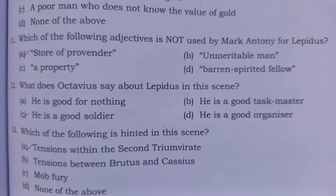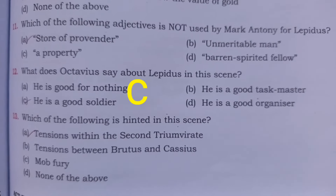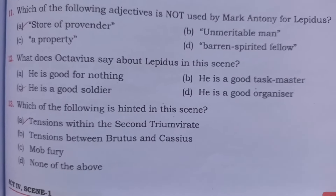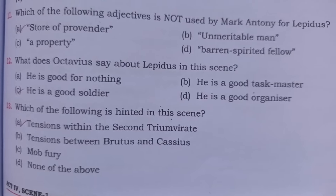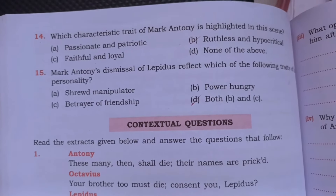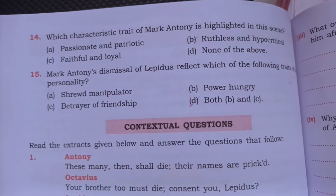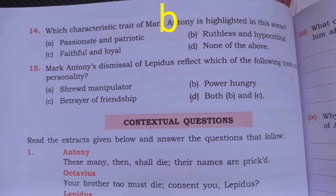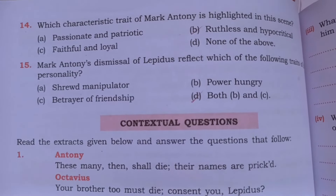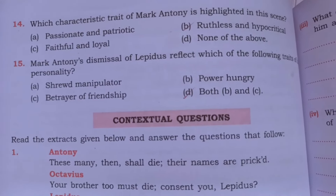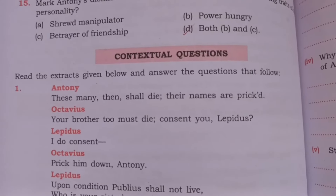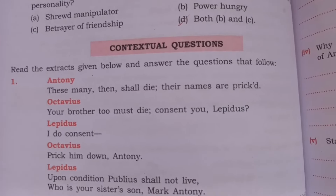Question twelve: what does Octavius say about Lepidus in this scene? Option C is correct: he is a good soldier. Question thirteen: which of the following is hinted in this scene? Option A is correct: tensions within the second triumvirate. Question fourteen: which characteristic trait of Mark Anthony is highlighted in this scene? Option B is correct: ruthless and hypocritical. Question fifteen: Mark Anthony's dismissal of Lepidus reflects which of the following traits? Option D is correct: both B and C.